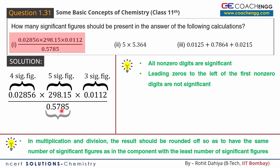The last term has 4 non-zero digits: 5, 7, 8, and 5. So it has 4 significant figures. Among all four terms — 4, 5, 3, and 4 significant figures — the least is 3, so the answer for part one should have 3 significant figures.